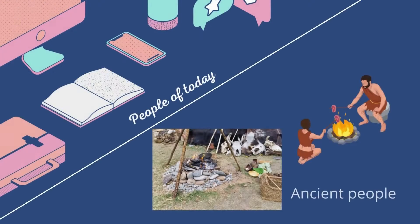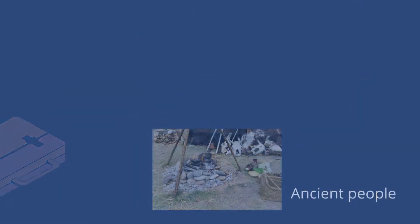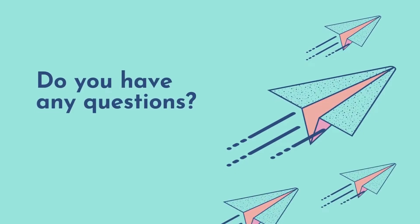With all this in mind, one can conclude that developments in science and technology, aside from affecting people's lives, were the results of many prior antecedents. Out of necessity, people in ancient times were able to discover and invent things that would impact the lives of modern people. This is the end of Part 1 of this chapter. If you have any questions, you can post them in our Facebook group chat. Have a good day, everyone.